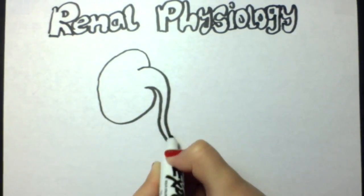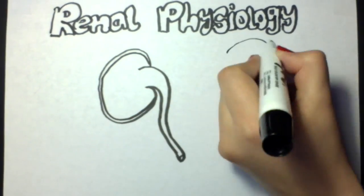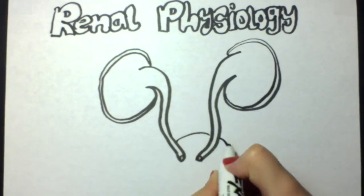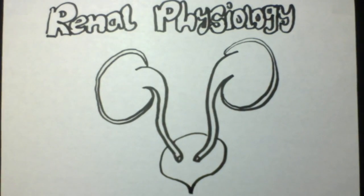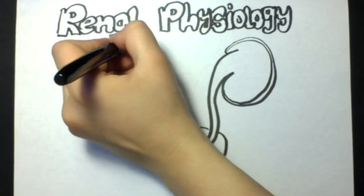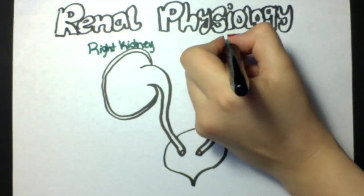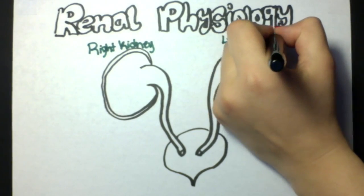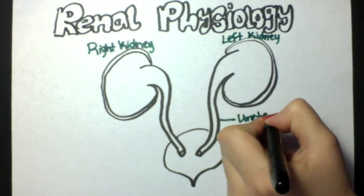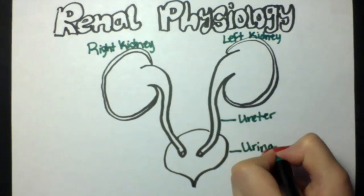Humans have two kidneys. They are four inches long and two to three inches wide. The kidneys are located in the posterior abdominal wall. The right kidney tends to be lower than the left due to the large lobe of the liver.